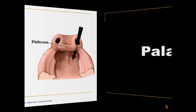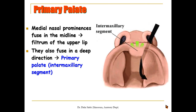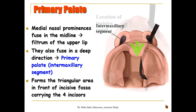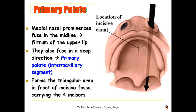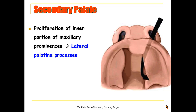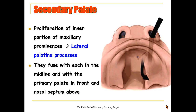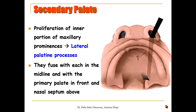For the development of the palate: the median nasal prominences fuse in the midline to form the philtrum of the upper lip, and they also fuse in a deep direction to form what is called the primary palate or intermaxillary segment — a triangular area in front of the incisive fossa that will carry the four incisors. Proliferation of the inner aspects of the maxillary prominences then grows medially to form the lateral palatine processes, which fuse with each other in the midline, with the primary palate, and upward with the developing nasal septum to complete the formation of the hard and soft palate.